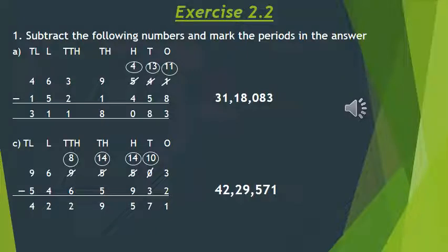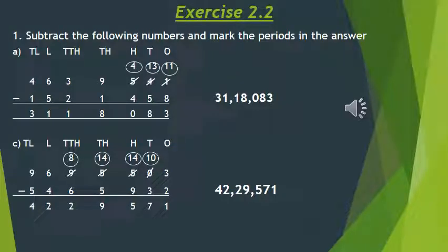Next at the tens place, we have 5 minus 3 — we have made it 13, so 13 minus 5 is 8. That means we have to borrow from the hundreds place, so 5 becomes 4. Then 4 minus 4 is 0. Then 9 minus 1 minus 8, then 3 minus 2 minus 1, then 6 minus 5 minus 1, and finally 4 minus 4 minus 1, which is 3. So the number is 31,18,083.